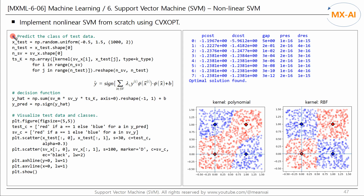To visually check the nonlinear decision boundary, we randomly generate 1000 test data points in this space and predict all their classes. We generate a kernel matrix between all support vectors and the test data points, then create a decision function using this formula: SVM is the lambda value of the support vector, SVY is the class, and TSK is the kernel matrix between support vectors and test data points. Adding B gives the decision function; test data with positive y-hat is predicted as +1, and negative y-hat as -1. This is YPRED, the predicted class.